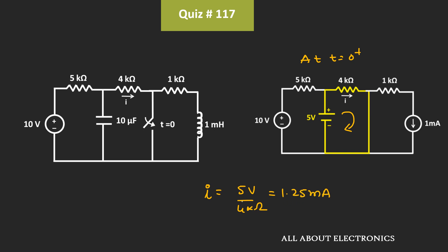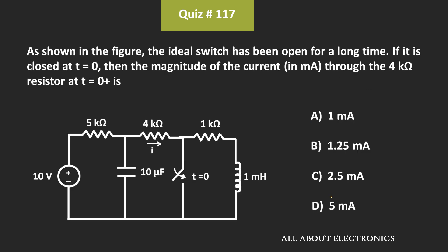So we can say that at time t is equal to zero plus, the current through this 4kΩ resistor is equal to 1.25mA. And hence, for the given question, B is the correct answer.